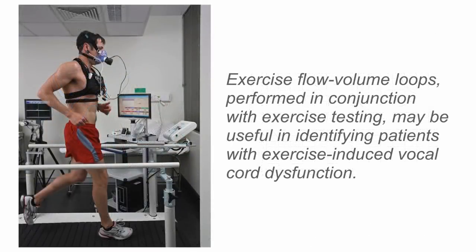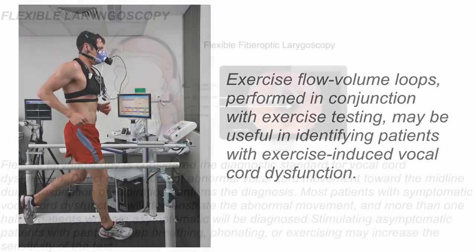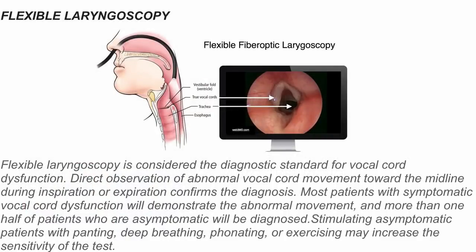Exercise flow-volume loops performed in conjunction with exercise testing may be useful in identifying patients with exercise-induced vocal cord dysfunction. Flexible laryngoscopy is considered the diagnostic standard — direct observation of abnormal vocal cord movement towards the midline during inspiration or expiration confirms the diagnosis. Stimulating asymptomatic patients with panting, deep breathing, phonating, or exercising may increase the sensitivity of the test.